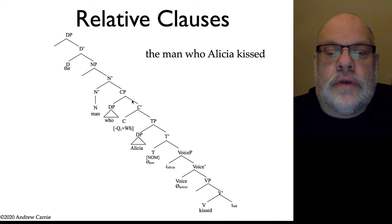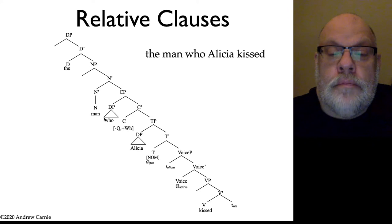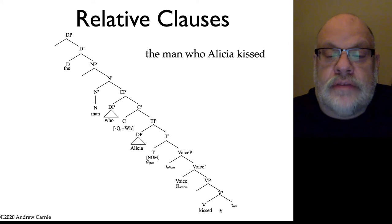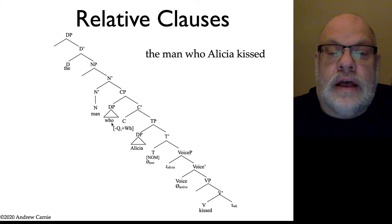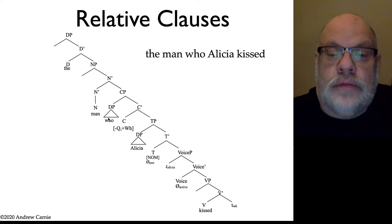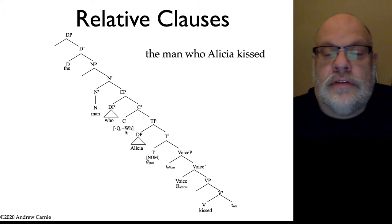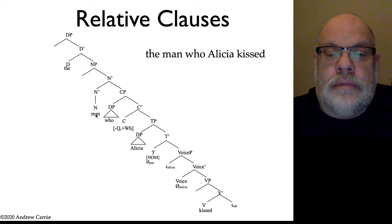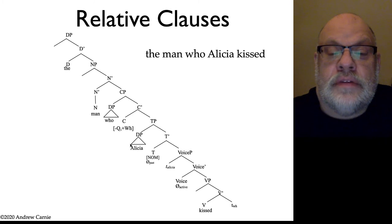What's going on in the rest of this is that this modifying structure has a WH movement in it, which is what connects 'man' to the rest of the sentence here. So it connects 'man' down effectively into this object position. So we know it's 'Alicia kissed the man.'